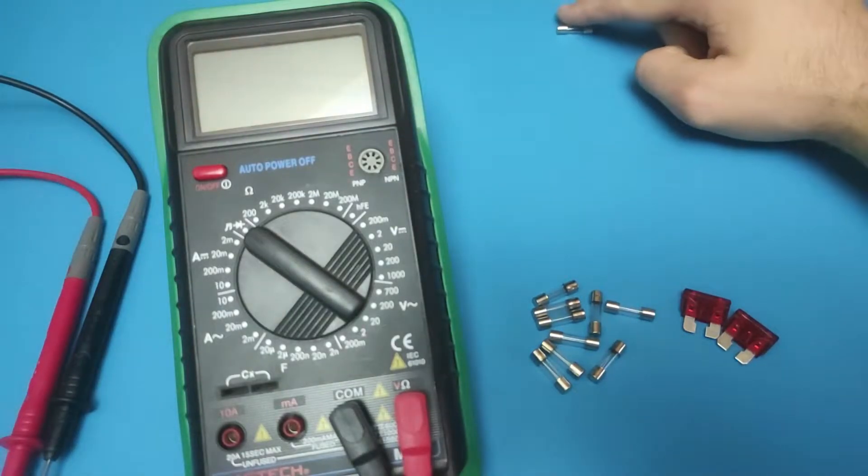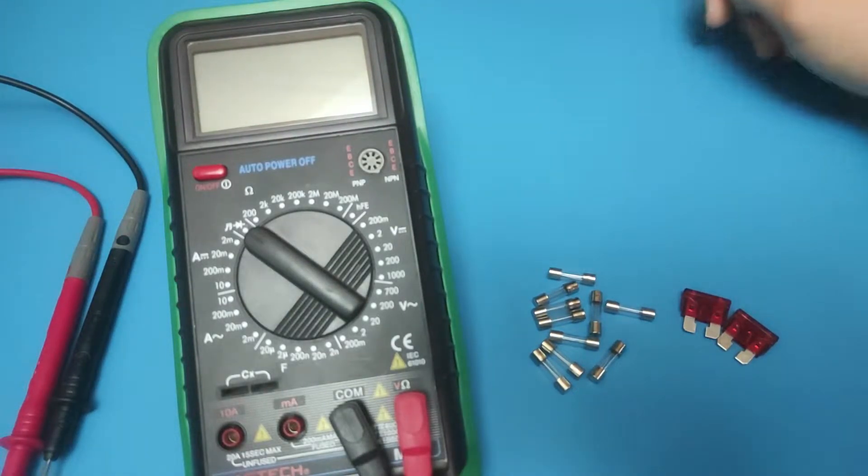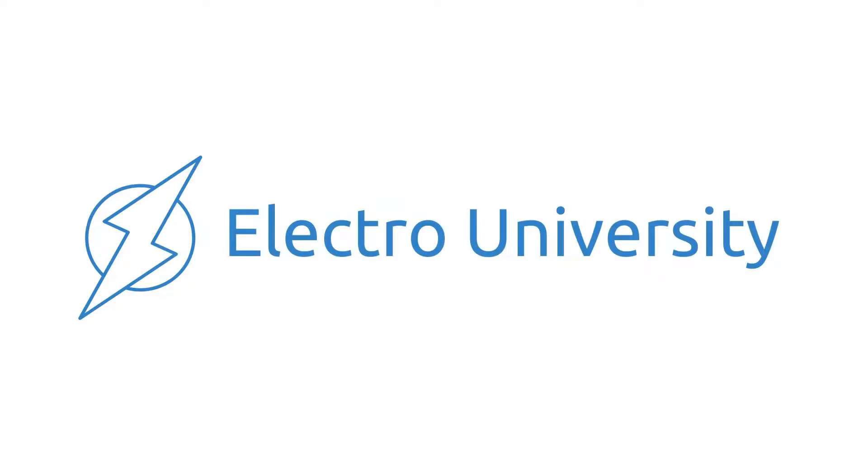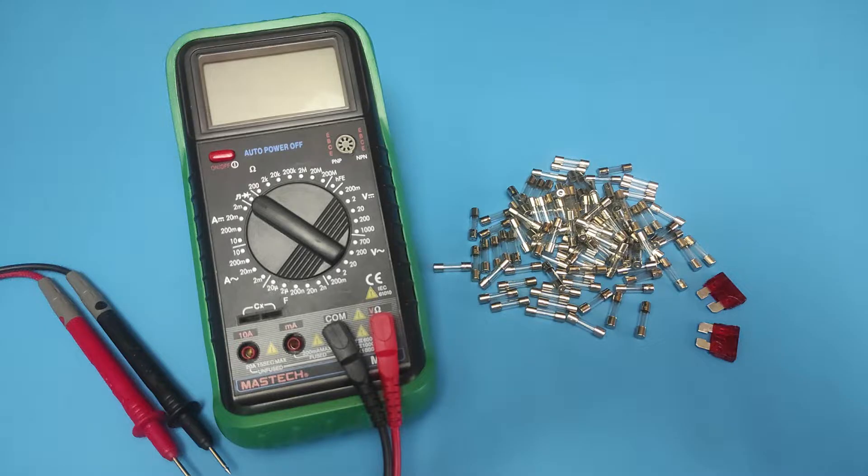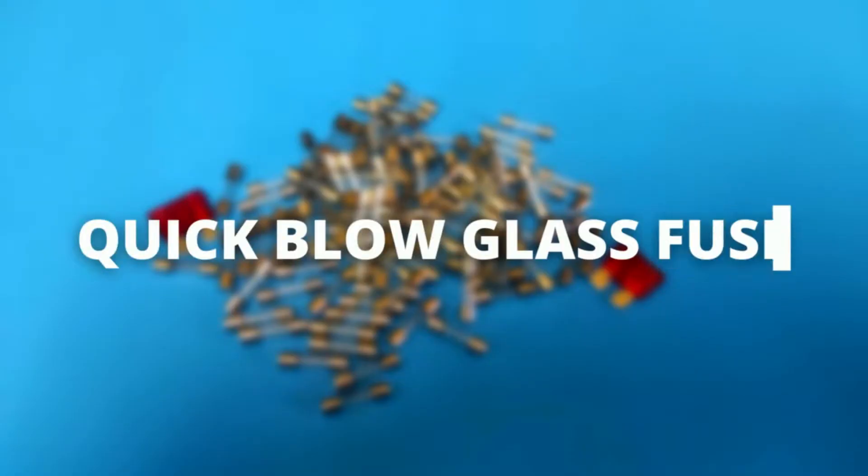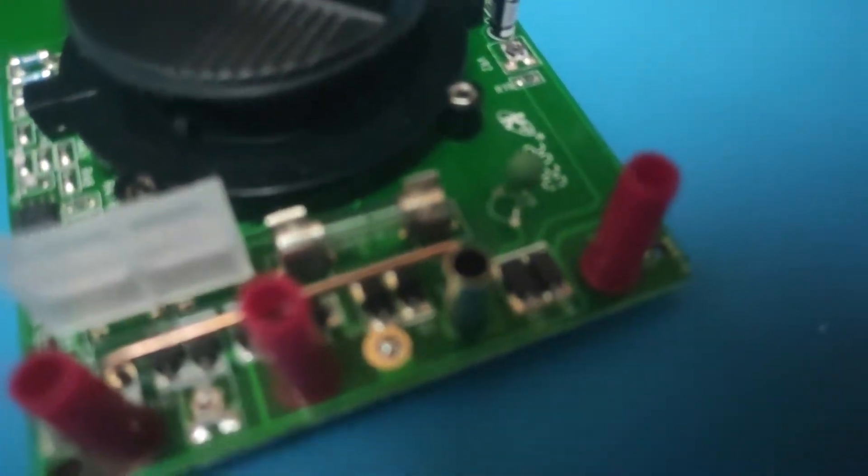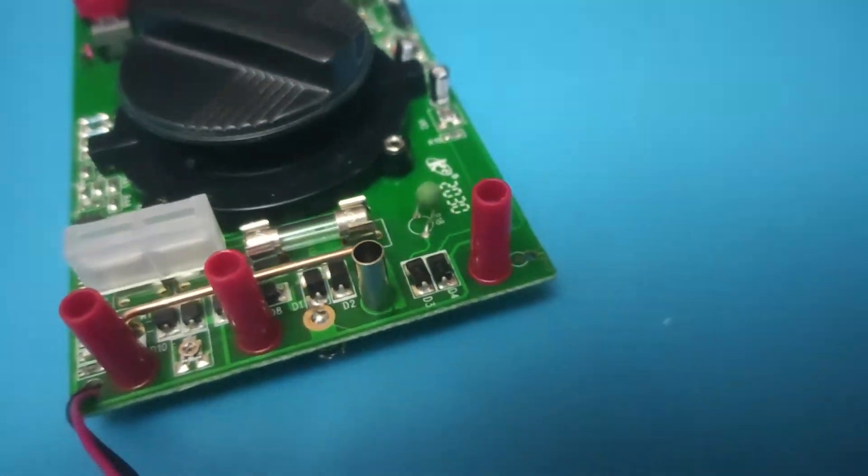In today's video, I will show you how to test a fuse with a multimeter. There are two main types of fuse: quick blow glass fuse and car fuse. Let's first see how to test quick blow glass fuse. The first step is to take the fuse out of the electrical circuit it is in.